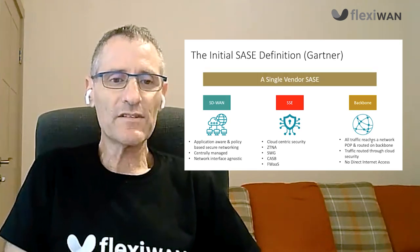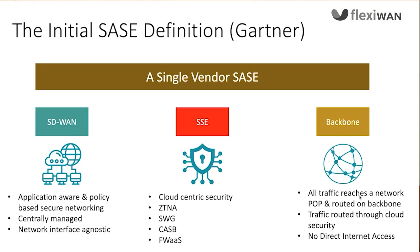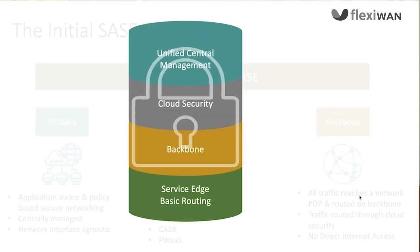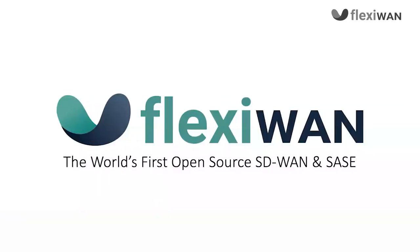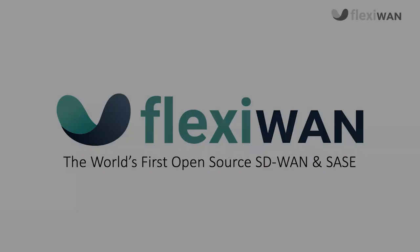This is what is considered single-vendor SASE. As mentioned, it is a silo — you cannot break this silo; you need to get everything from that one vendor. This typically gives the vendor much more power to increase costs, and that's what's expected.